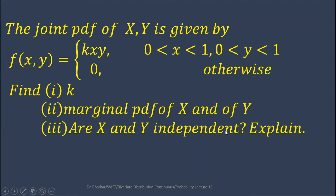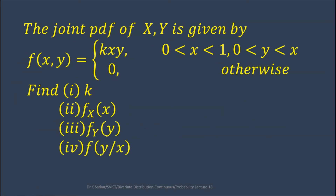The next question: the joint PDF of (x, y) is given by f(x, y) = k·x·y when 0 < x < 1 and 0 < y < x, and f(x, y) = 0 otherwise. The difference between the previous problem and this one is that the y limits were 0 to 1 there, and here they are 0 to x.